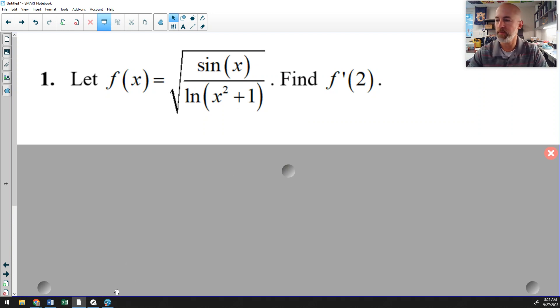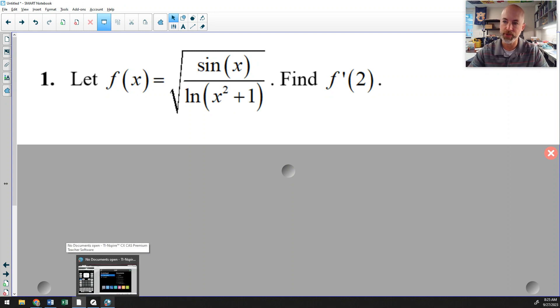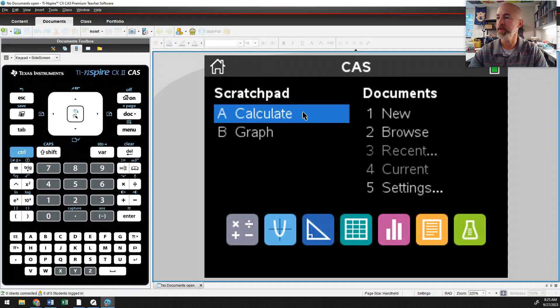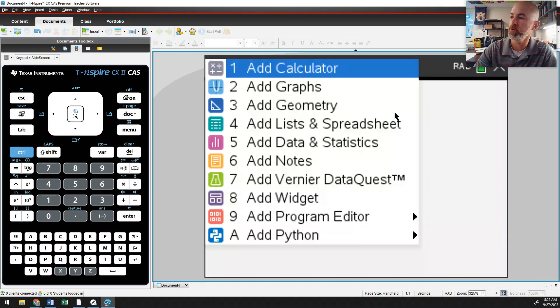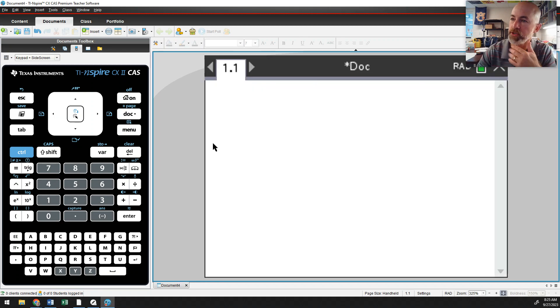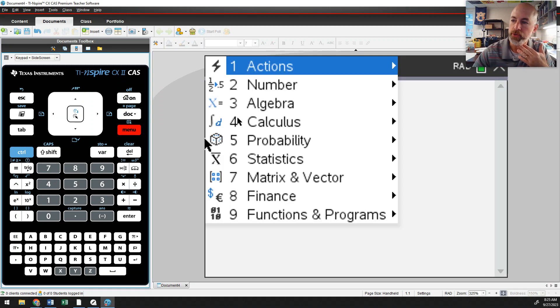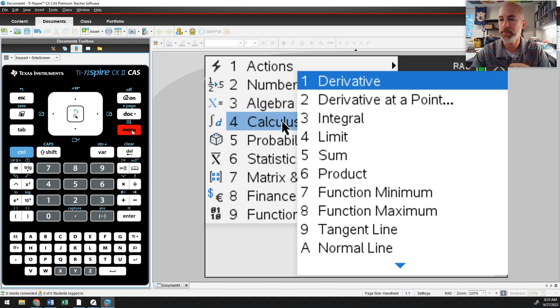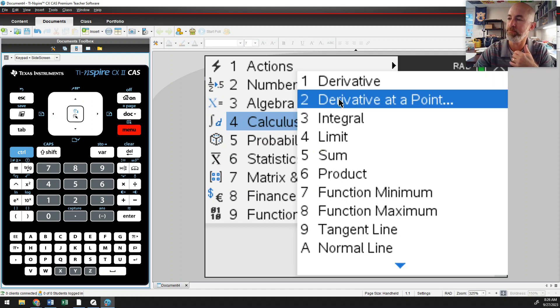We will pretend this is a free response question. And all you would have to do is write down f prime of two equals and the answer. You don't have to show any work leading up to it because they expect you to use a certain command in the calculator. So I'm going to add a new calculator screen and we will go to calculus, the menu option, calculus, and then choose derivative at a point.